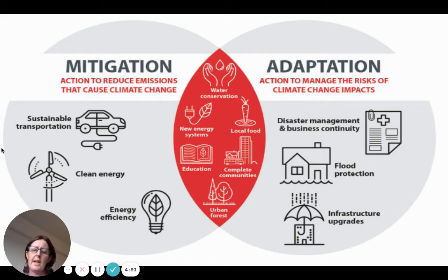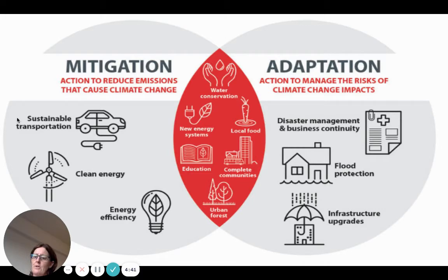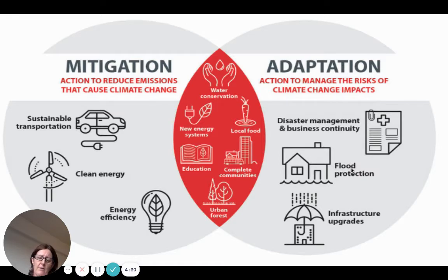We're going to look at mitigation and adaptation strategies. You can see in the middle here some of these things actually do cross over, especially looking at forests. If I talk about mitigation, I'm really talking about reducing the emissions. If I talk about adaptation, I'm talking about what I can do to reduce the impact — so if sea level is rising, more coastal erosion, more flooding and storm surges.